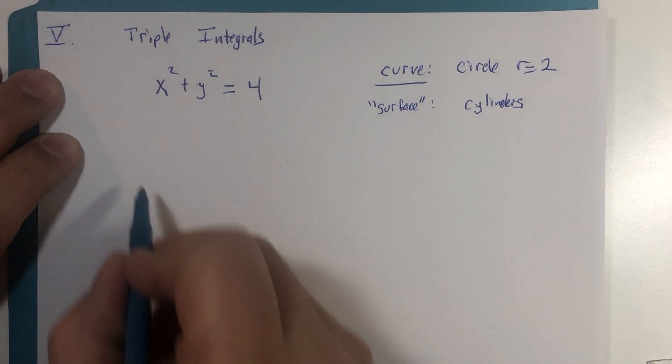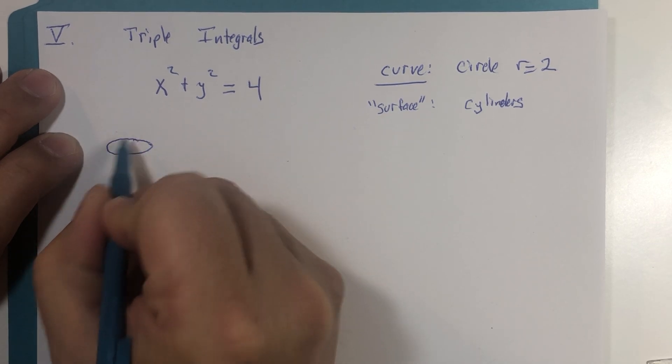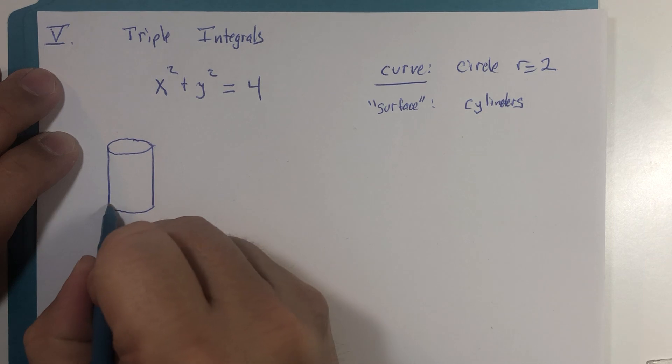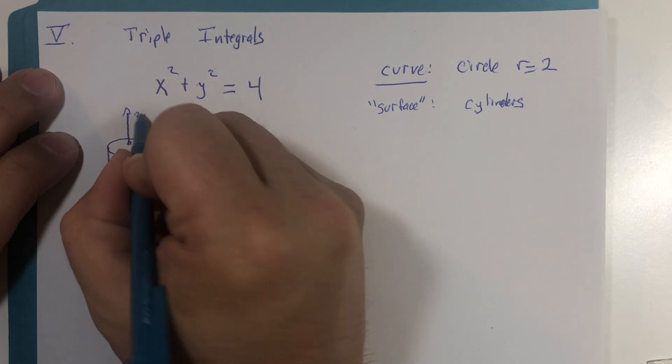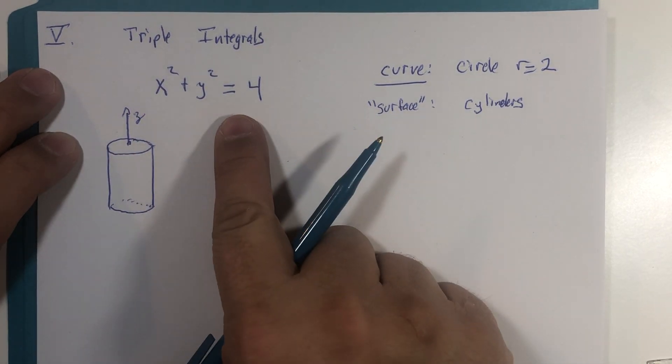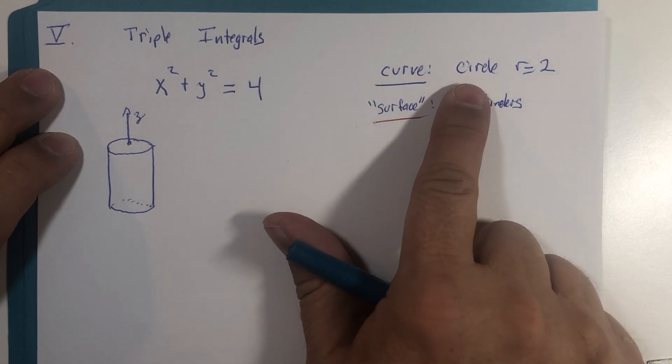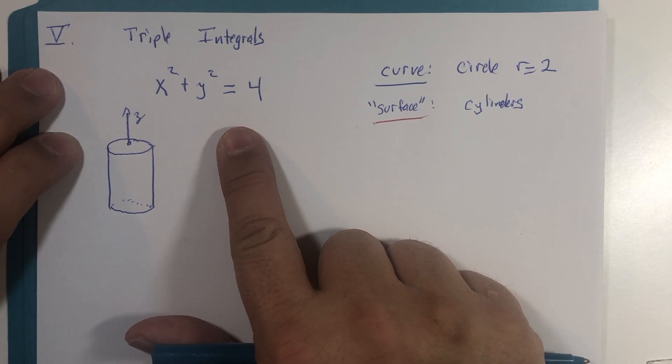But the concept of a cylinder was you would take a two-dimensional shape and then extend it forever into the third dimension. And it turns out that if this was labeled as a surface or if they called it a cylinder, then we would know that this is actually the equation of a three-dimensional object. If it's called a curve, we would know that it is a two-dimensional object.